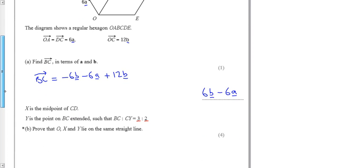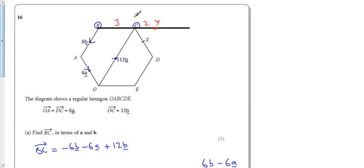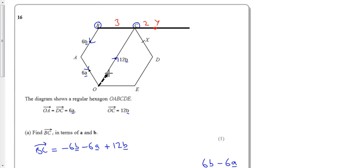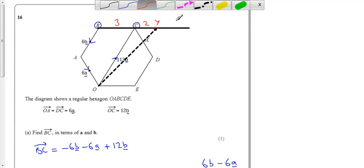And we need to prove that O, X, Y line is a straight line. So we need to show that there's a straight line O, X, Y, and then we're on a straight line. Well, let's break it up into bits.